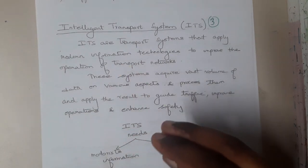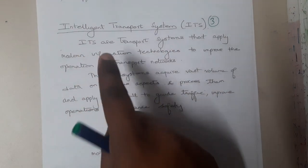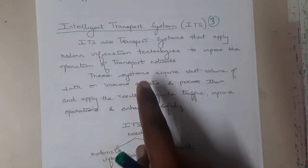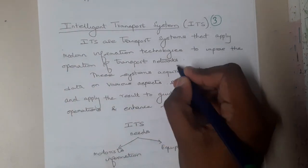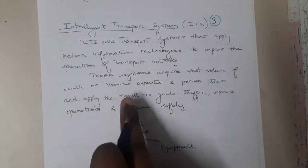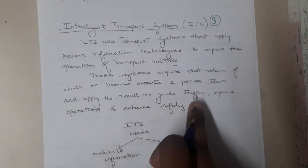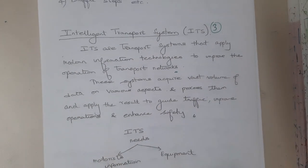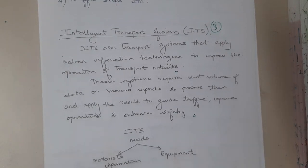That concept is nothing but Intelligent Transport System. It is a transport system that applies modern information technologies — like image processing — to improve the operation of transport networks and enable smooth movement. These systems acquire vast volumes of data on various aspects, process them, and apply the results to guide traffic, improve operations, and enhance safety. Our goal is to increase safety and ensure smooth movement of traffic.